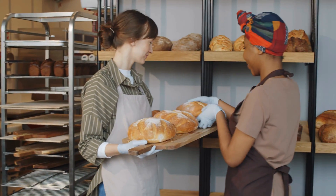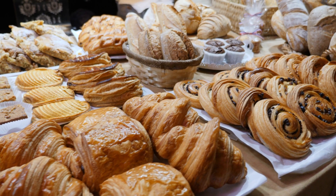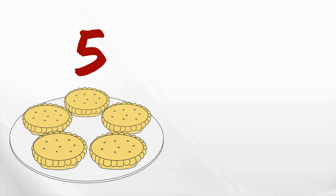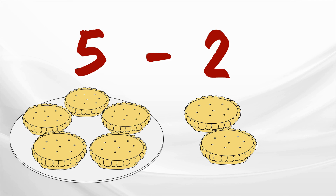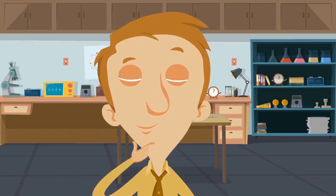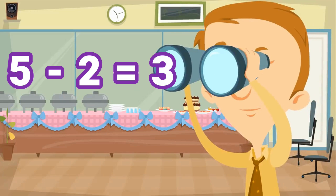We're in a bakery — how cool is that? There are so many baked goodies here and plenty of customers. Let's say the bakery had five pies and they sold two of them. To find out how many are left, we have to figure out what five minus two is. Yeah, three. Great job. So there were five and then two were sold. After we subtract two, three are left. Five minus two equals three.